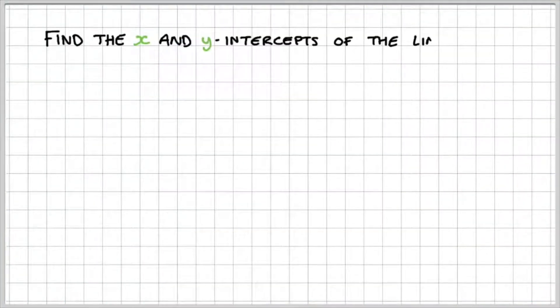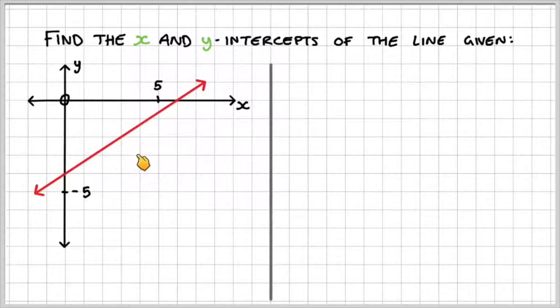So let's have a look at an example. Find the x- and y-intercepts of the line given. We have our graph and this straight line running across, and we're going to find the x- and y-intercepts.